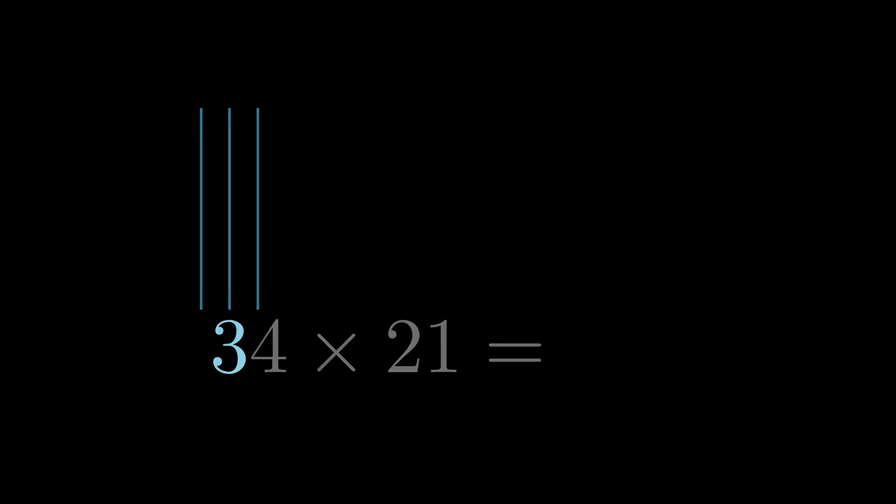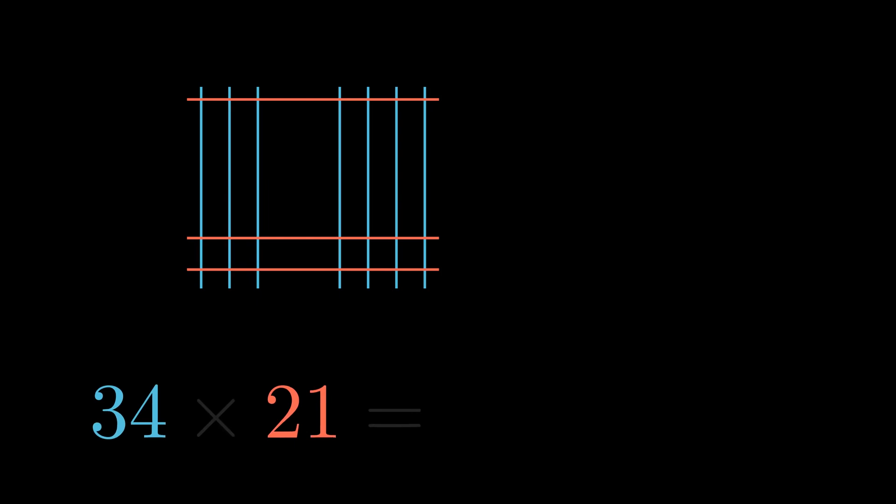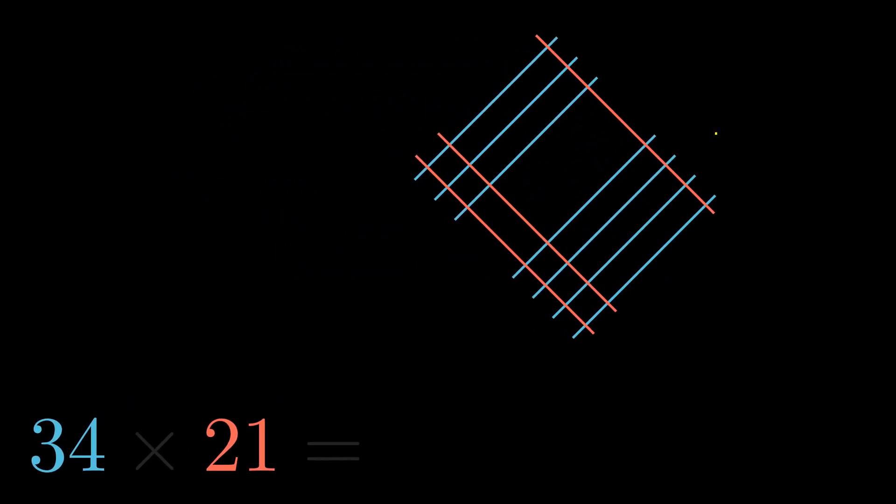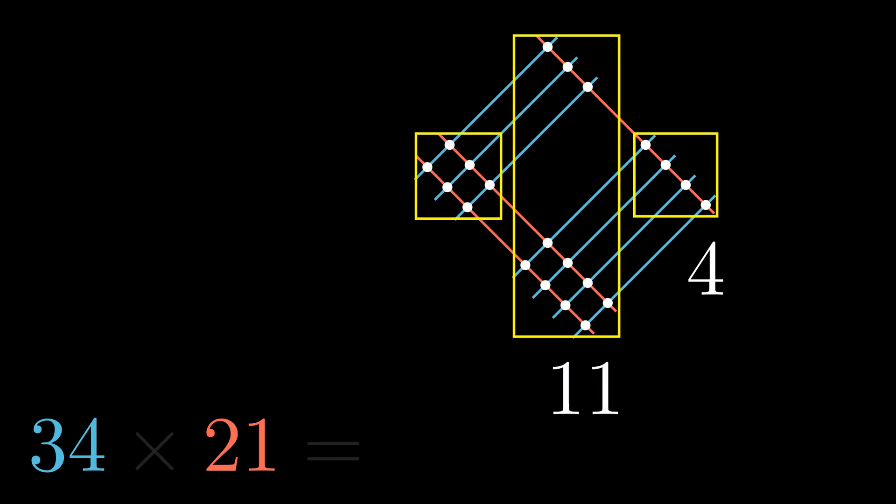This example is slightly more challenging as the number of dots in a column will be more than 10. Let's have a look. Again, working in columns, we have four intersection points here. Moving on to the next column, we find that it has a total of 11 points, while the leftmost column has six.